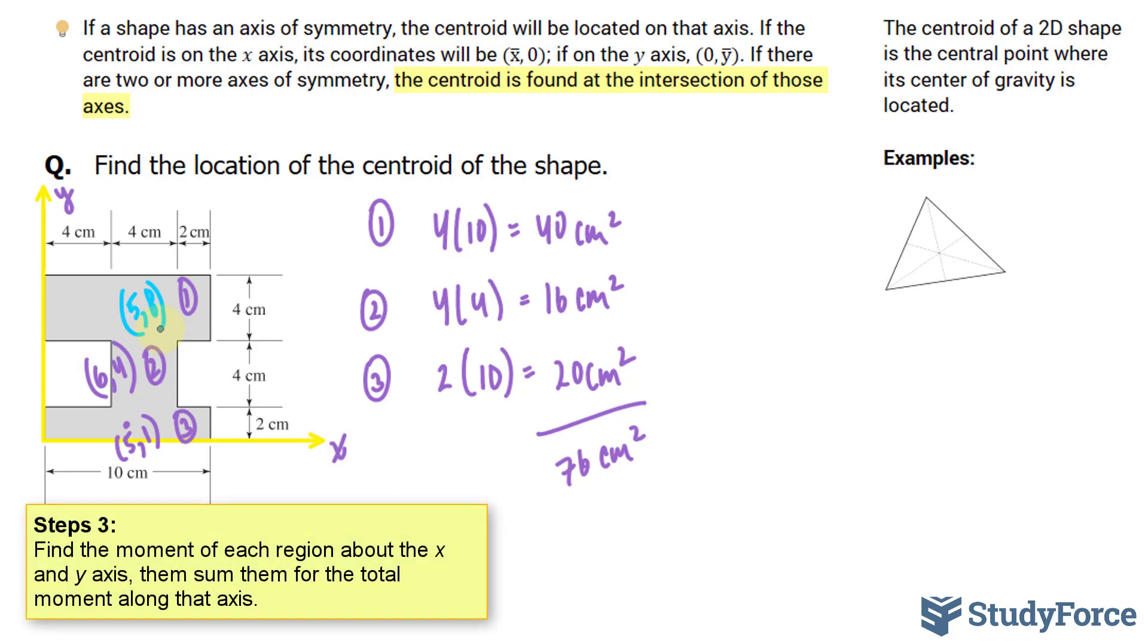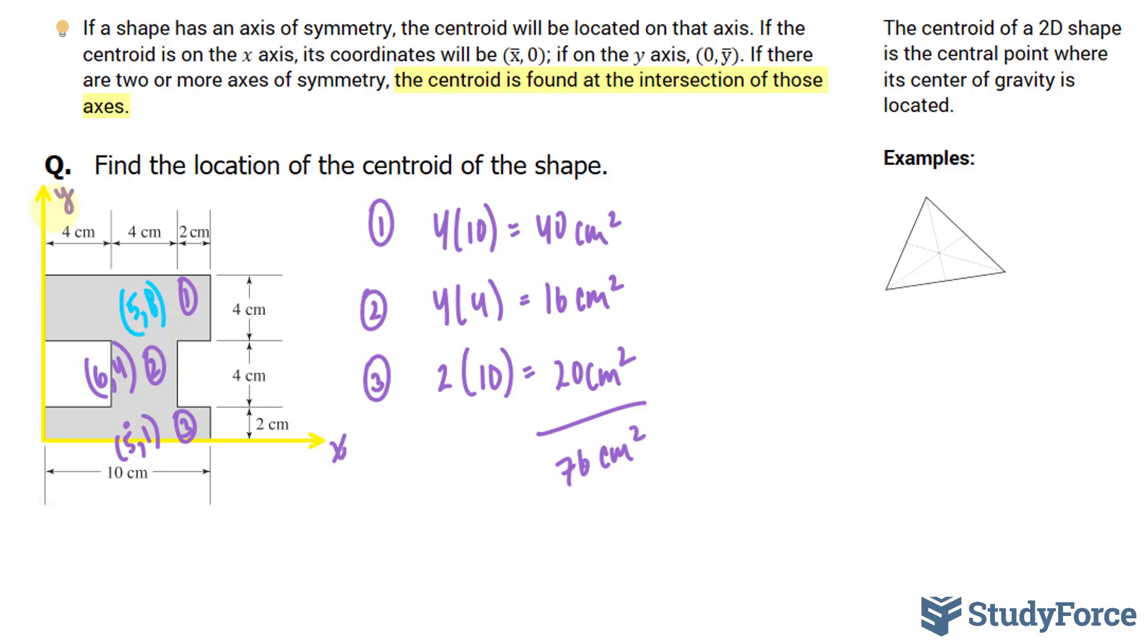Once you've done that, you have to find the moment about each axis. And we're going to call the moment about the y-axis, m subscript y. And the moment about the x-axis, m subscript x. To find the moment about the y, m subscript y, we will use the formula, moment is equal to the area times the distance to the centroid. So we'll take the area of each and multiply it to the perpendicular distance of its centroid. So since we are doing it about the y-axis, we'll multiply the area of 40 by 5. And the reason why we multiply by 5 and not 8 is because,